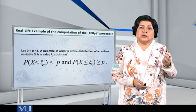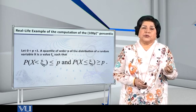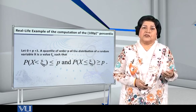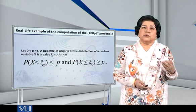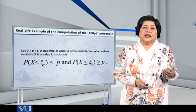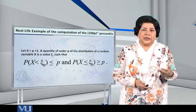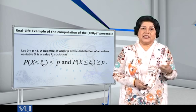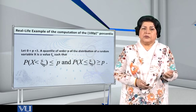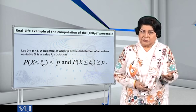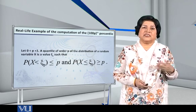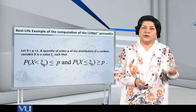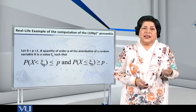Consider the number p, which lies between 0 and 1. A quantile of order p of the distribution of a random variable x, it is a value xi p such that the probability that the random variable x is less than xi p is less than or equal to p. And the probability that the random variable x is less than or equal to xi p is greater than or equal to p.